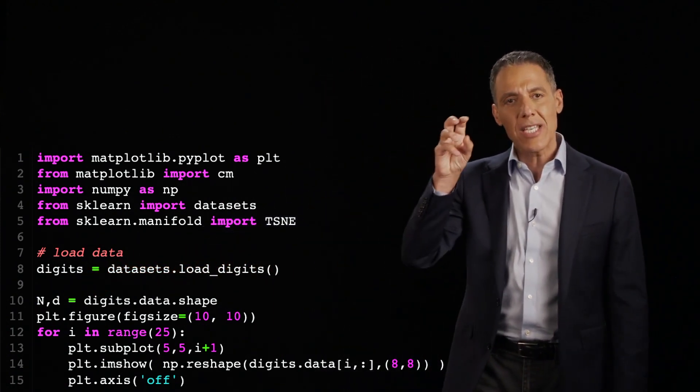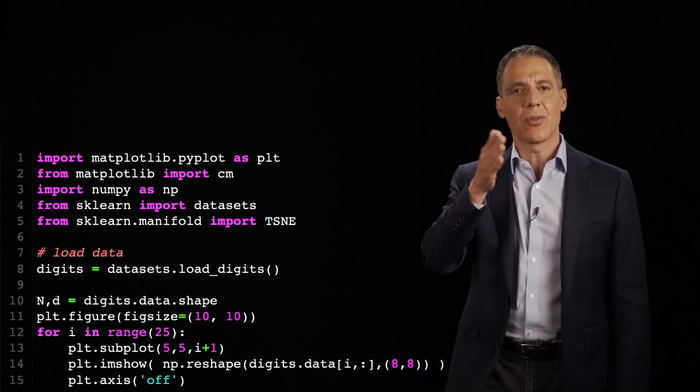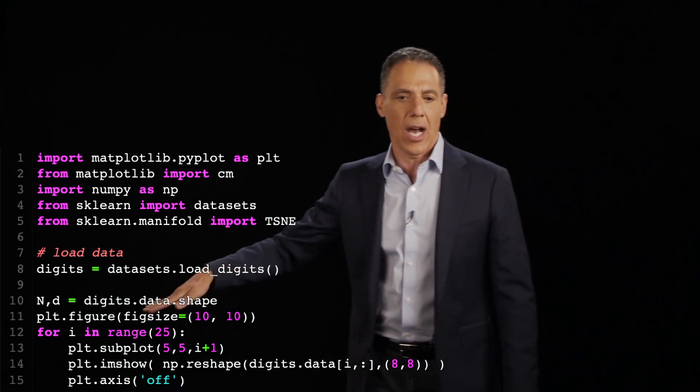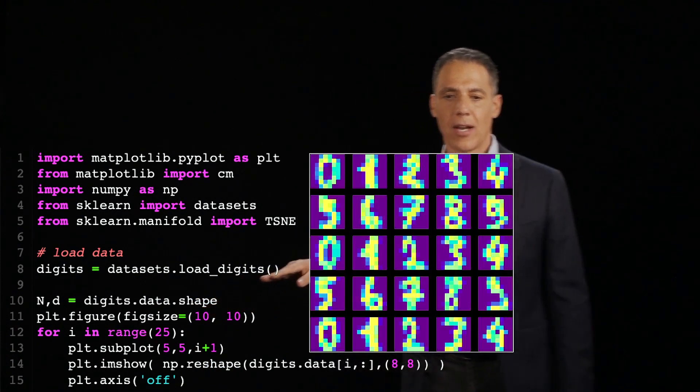So we're going to grab this digits dataset, which are a bunch of images of various digits, 0 through 9. I'm going to go ahead and just visualize these, make sure that I can read them, make sure they are what I think they are.